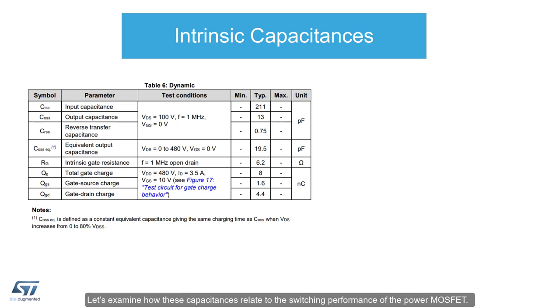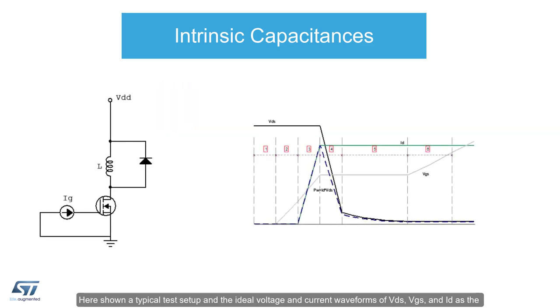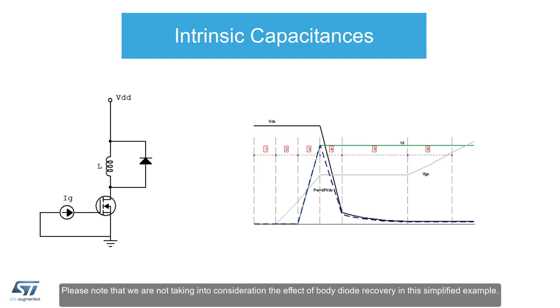Let's examine how these capacitances relate to the switching performance of the power MOSFET. Here is shown a typical test setup and the ideal voltage and current waveforms of VDS, VGS, and ID as the device transitions from off to on. We'll break down the transition into six switching states as seen here. Please note that we are not taking into consideration the effect of body diode recovery in this simplified example.